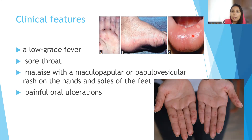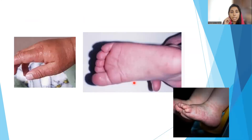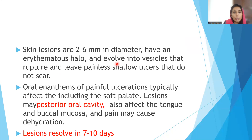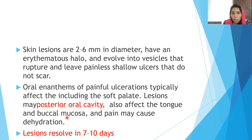The oral ulcerations are really painful, so parents may bring the child with complaints of not feeding well or drooling of saliva. When you open the mouth, you can see multiple throat ulcers. The lesions start as small macules and evolve into papules and then vesicles. Initially two to six millimeters in diameter, one or two lesions may be mistaken for an insect bite. They evolve into vesicles, rupture, and leave painless shallow ulcers that do not scar.